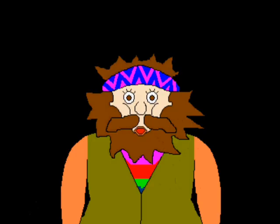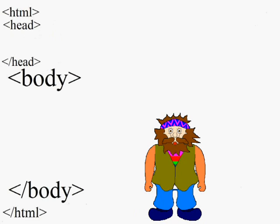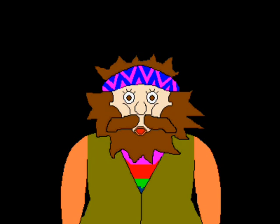There are two sections to any web page. First there is the head section, which are opening and closing tags with the word head in between them. Then there is the body section, which is an opening tag, a closing tag, and the word body in between them. These are nested between the two HTML tags that we already made.